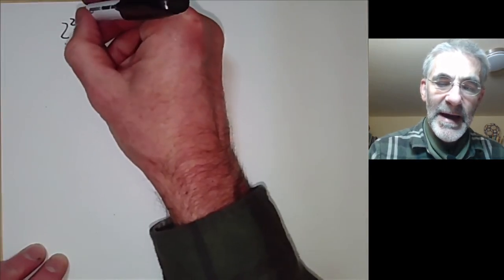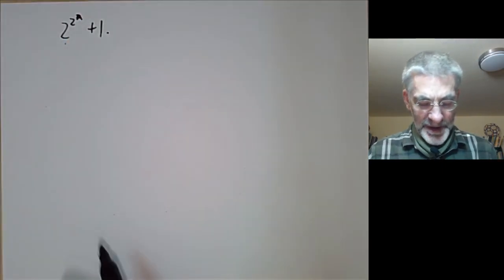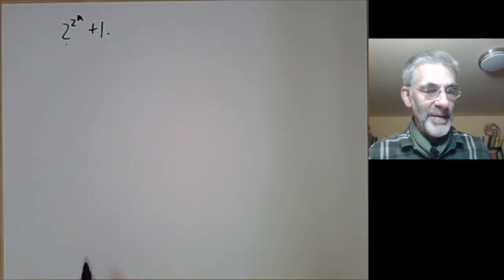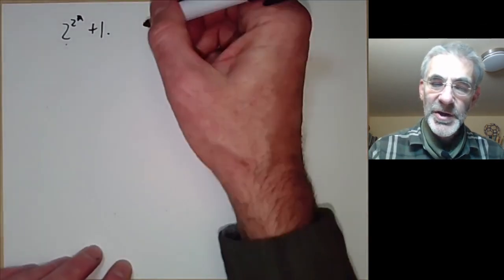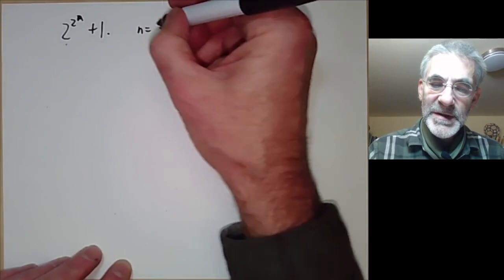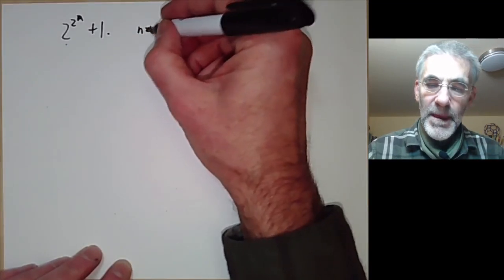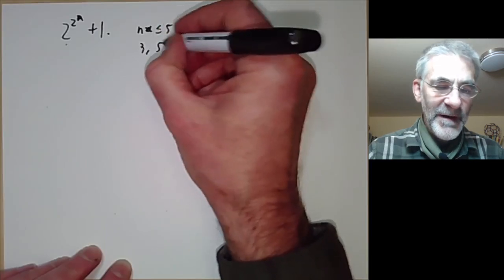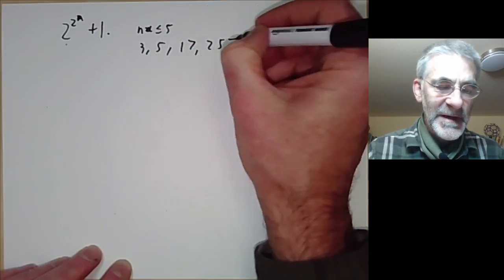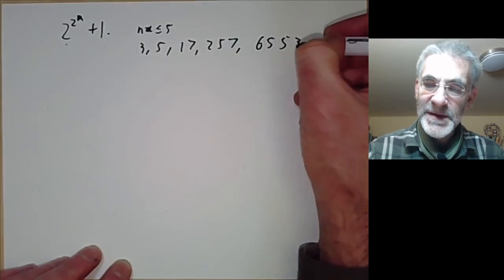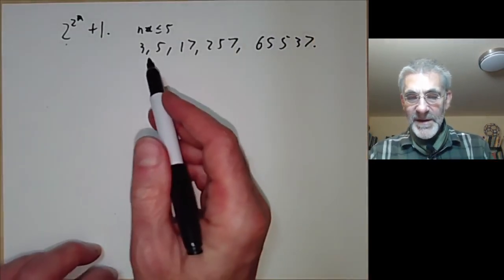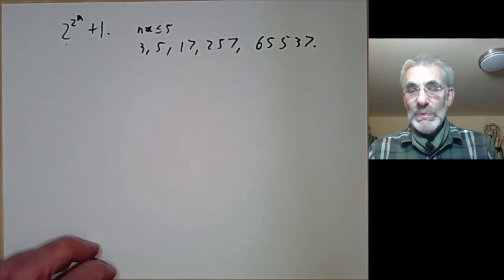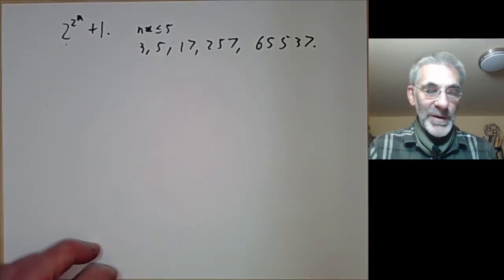And Fermat suggested the following possibility. He suggested the number 2 to the 2 to the n plus 1. So these are the Fermat primes as I mentioned in the introduction. And again for n equals up to about 5 this works. So we get the numbers 3, 5, 17, 257, 65537. But after that these numbers have been composite as far as anyone has checked.